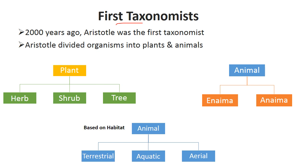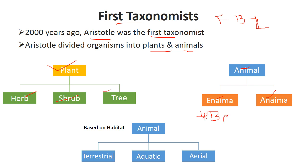The first taxonomist was Aristotle, around 350 BC — about 2,000 years ago. He is also considered the father of biology. He classified all living organisms into two parts: plants and animals. He divided plants into three groups: herbs, shrubs, and trees. He divided animals into two parts: Enaima, meaning with red blood cells, and Anaima, meaning without red blood cells. He also divided animals based on habitat: terrestrial, aquatic, or aerial.